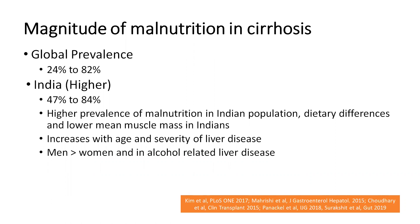In India, this proportion is higher — around 47 to 84 percent. The reason is that nutritional intake is poor in the Indian population, and the low muscle mass seen in Indian population also contributes to this. Men have a higher prevalence compared to women, and alcohol-related liver disease patients have a higher incidence of malnutrition compared to other etiologies of liver cirrhosis.